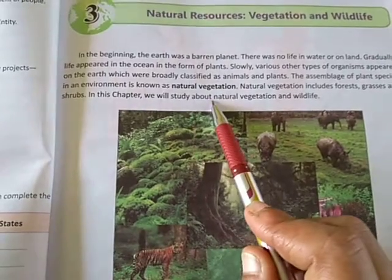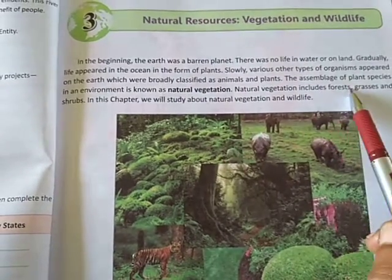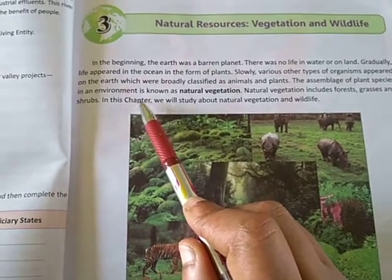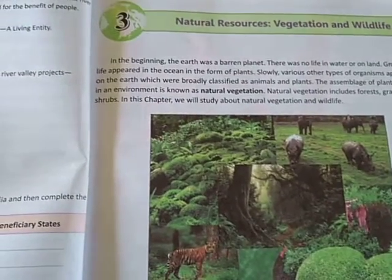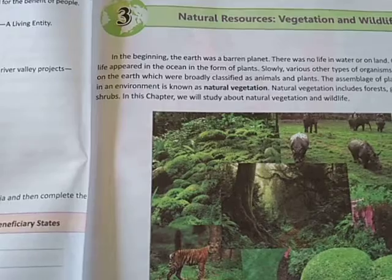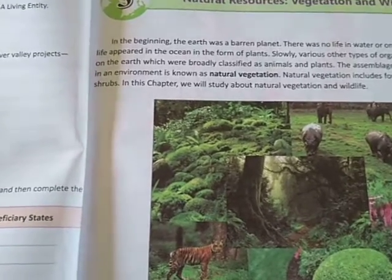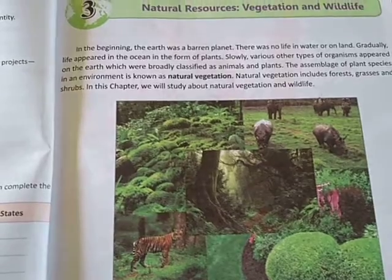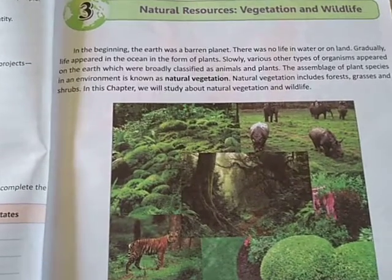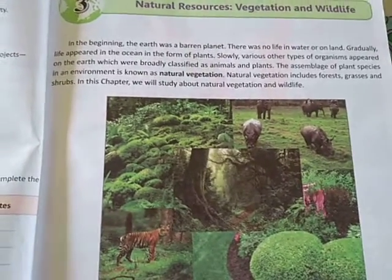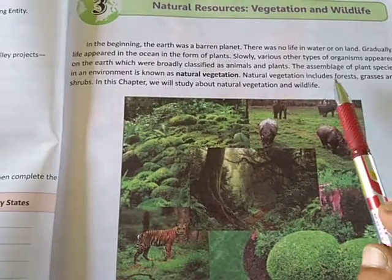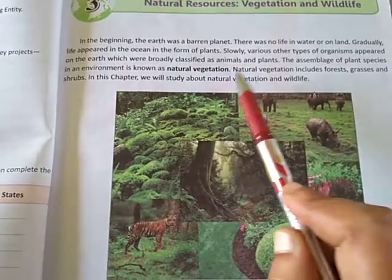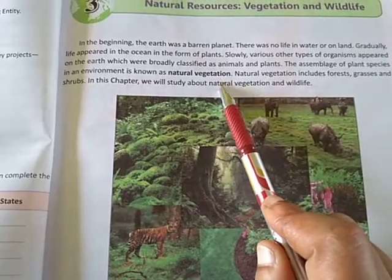What is natural vegetation? The assemblage of plant species in the environment. Jitne bhi plants hai joh environment ke according grow kerte hai, vaha ke temperature ke according grow kerte hai, without human involvement — those are known as natural vegetation. Kisi area mein, uske environment ke according joh plant species grow kerte hai, those are known as natural vegetation.